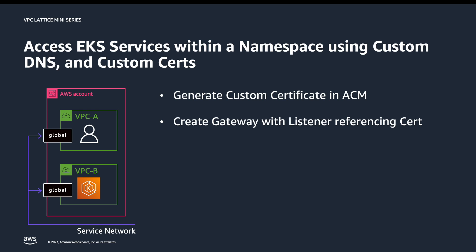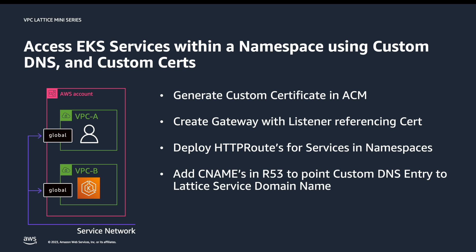Then we'll create a gateway object in Kubernetes with a listener which references the ACM certificate. We do this by using the ARN of the certificate. Next, we'll create HTTP routes for the VPC Lattice services. In these HTTP routes, we'll define the backend Kubernetes services, their namespace, and the custom domain name we wish to use. Wrapping up the configuration, we'll add a Route 53 CNAME entry to map the custom domain name to the auto-generated VPC Lattice domain name. Finally, we'll test the custom domain names to access the services.